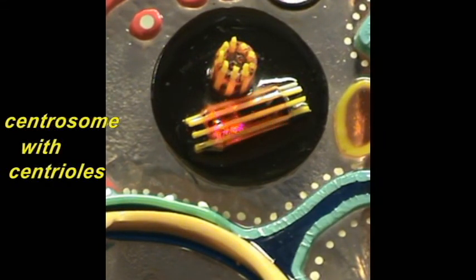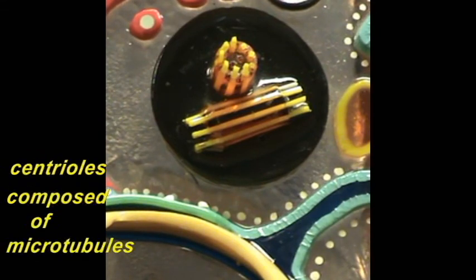Again, the centrioles are cylindrical structures that would be oriented at right angles to one another, as you can see here. And these centrioles are composed of microtubules.